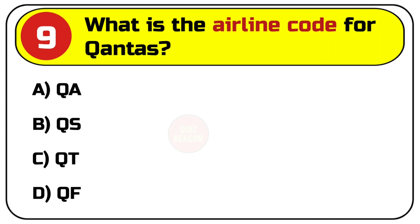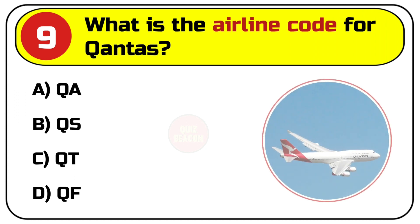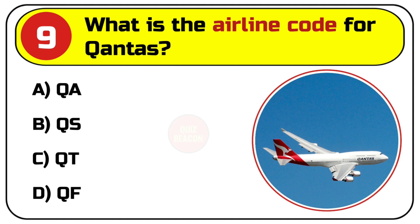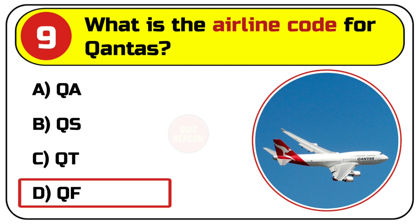Question number nine: what is the airline code for Qantas? Options are A. QA, B. QS, C. QT, D. QF. Correct answer is D. QF.